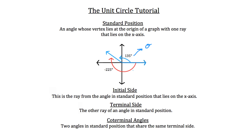Now we also have what's called coterminal angles. Notice that this blue angle in standard position goes in the positive direction, so counterclockwise around the graph in the coordinate plane. If you had gone clockwise or just the opposite direction, you'll notice this red angle has a measure of negative 225 degrees. It's negative because we're going clockwise, and it's 225 degrees because that's the measure: 90 plus 90 makes 180, and another 45 degrees makes negative 225 degrees. This angle is called the coterminal angle because it's sharing the terminal side of this angle in standard position. Two angles in standard position that share the same terminal side are called coterminal angles.